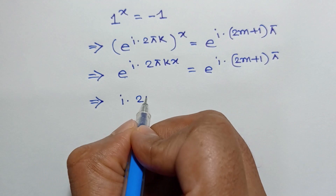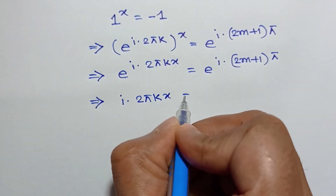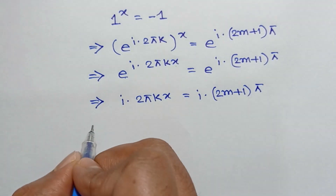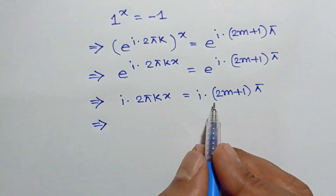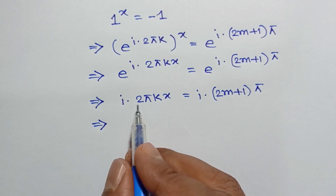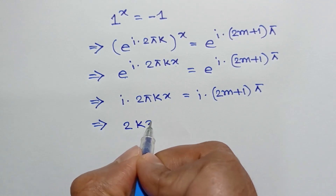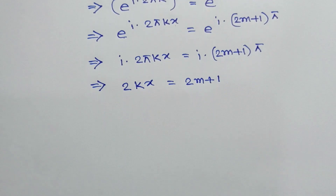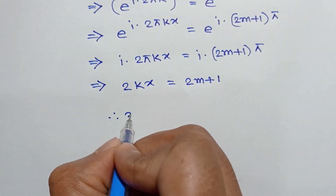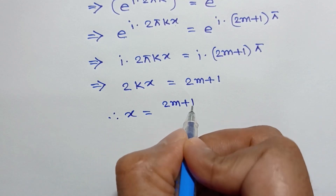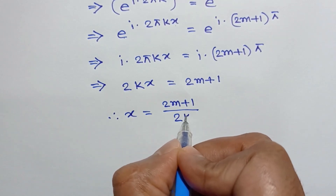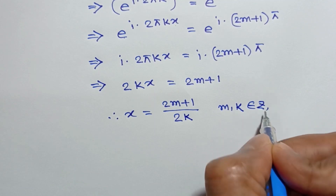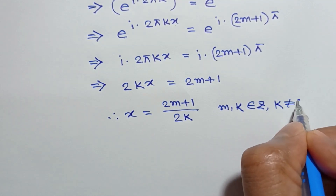Equating the exponents: i times 2 pi k x is equal to i times (2m+1) pi. Dividing both sides by i pi, we can write 2kx is equal to 2m plus 1. So the value of x is equal to (2m+1) over 2k, where m and k are integers and k is not equal to 0.